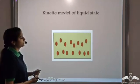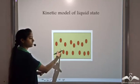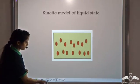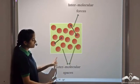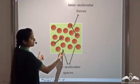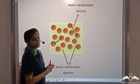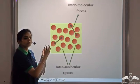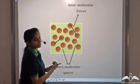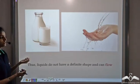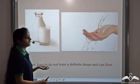Let's see the kinetic model of the liquid state. In this model, the particles are not as close to each other as in the solid state and are able to move a little more freely. In liquids, the spaces between the particles are larger compared to solids, so the intermolecular forces are weaker than in solids. Since the particles of a liquid are not as close to each other, liquids do not have a definite shape, they flow, and that is why liquids are known as fluids.